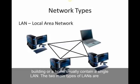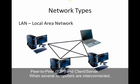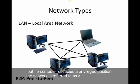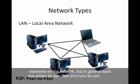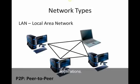LANs connect network devices over a relatively short distance. A networked office building or a home usually contains just a single LAN. The two main types of LANs are peer-to-peer and client-server. In a client-server network, one gets and one gives. In a peer-to-peer network, they can both give and both get. When several computers are interconnected but no computer occupies a privileged position, that's referred to as a peer-to-peer network, where each computer stores its own files and runs its own applications.